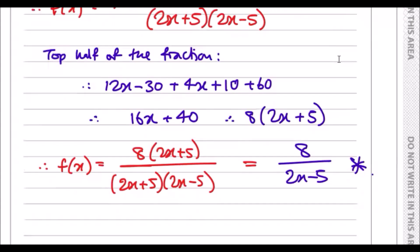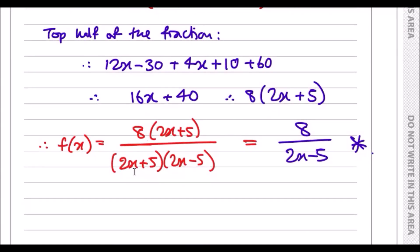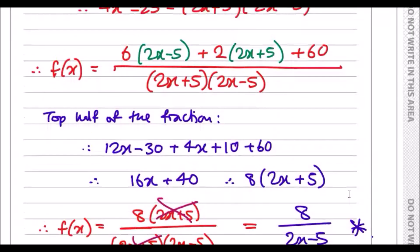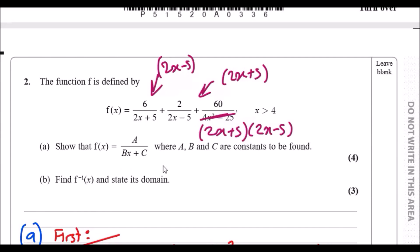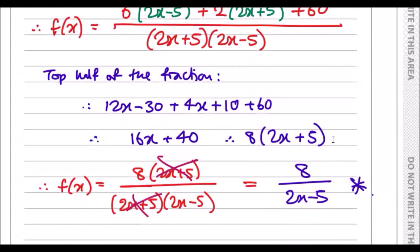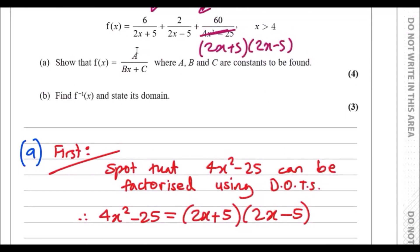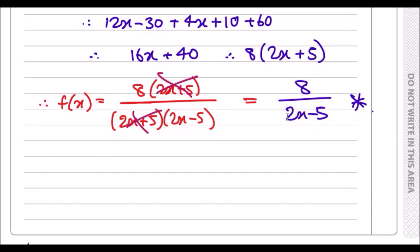And voila, you got 2x plus 5 on the top half. So essentially the function becomes something simple and then you can just cancel out and you're left with 8 over 2x minus 5, and that perfectly fits the A over Bx plus C. That's it, all done. And if you want to finish this off, this means where A is 8, B is 2, and C is negative 5.